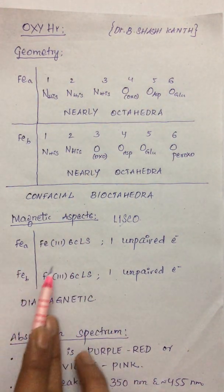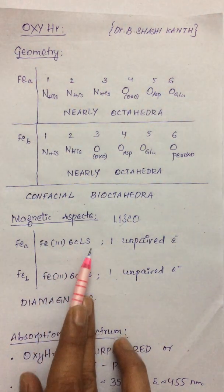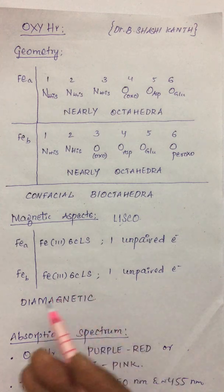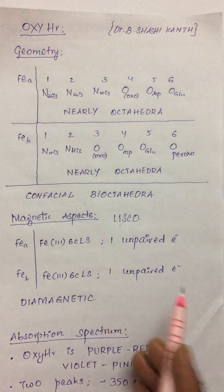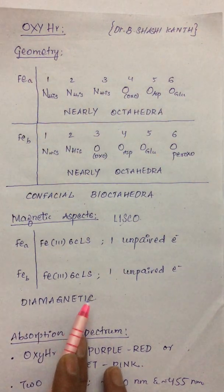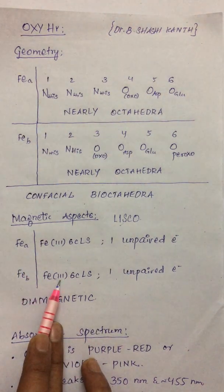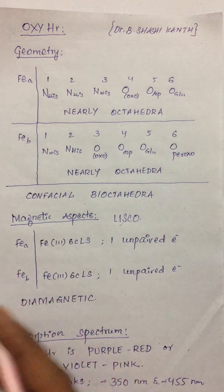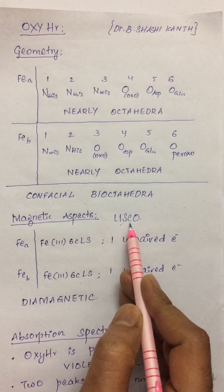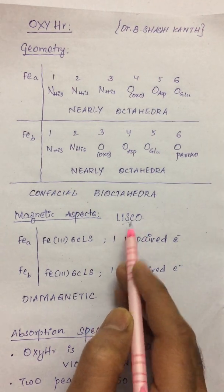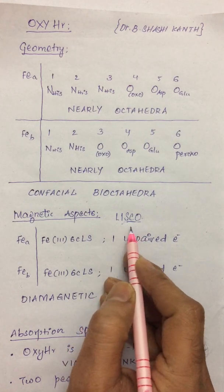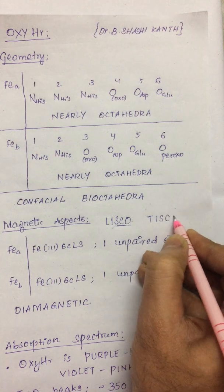In oxyhemerythrin, iron A and B are both converted to the +3 oxidation state, both low spin and six-coordinated. Since both are iron(III), they come much closer together and antiferromagnetic coupling increases greatly. Though there are two unpaired electrons (one in each iron), the compound is found to be diamagnetic due to very strong antiferromagnetic coupling. The conversion from deoxy to oxy form — where high-spin iron converts to low-spin iron — is referred to as a spin crossover (SCO). This is a ligand-induced spin crossover (LISCO), as opposed to a thermally induced spin crossover (TISCO) seen in some iron compounds.